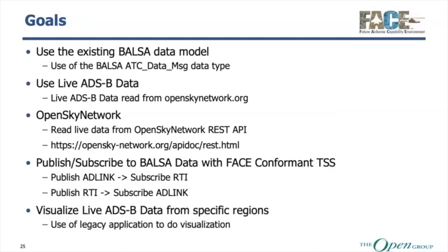There is a web server called OpenSkyNetwork.org, and using a REST API you can specify a region of space-time by latitude-longitude coordinates to get live ADS-B data. This demo has an app that gathers the data from OpenSkyNetwork and sends it via DDS topic to the publishers and subscribers. We have both a publisher publishing data from ADLink being received by RTI, and vice versa. On both sides, we have a visualizer that draws aircraft on a map and updates periodically once every 10 seconds, which is what OpenSkyNetwork allows.